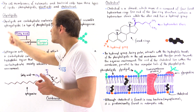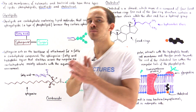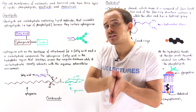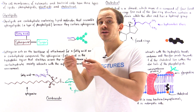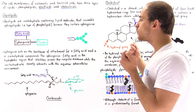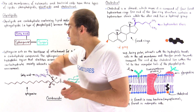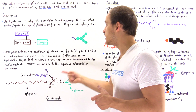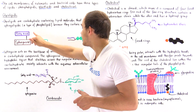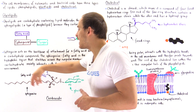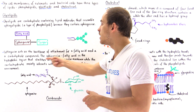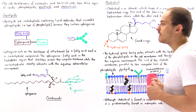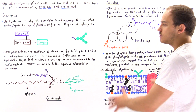This entire fatty acid-sphingosine molecule is predominantly non-polar. So this is the hydrophobic section that will be found inside the cell, interacting with the hydrophobic tails of the other phospholipid molecules. The sphingosine-fatty acid component is hydrophobic, meaning it stretches across the cell membrane interacting with the non-polar tails of those nearby phospholipids.